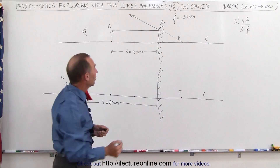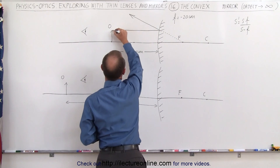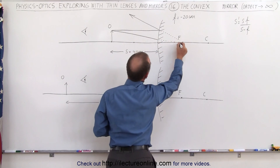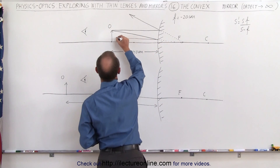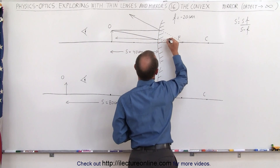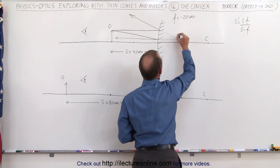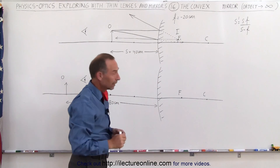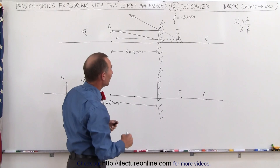The second ray is drawn from the object towards the focal point. But before you get to the focal point, the mirror will intercept. So instead of continuing on to the focal point, it will reflect back parallel to the optical axis, and for the observer it will appear as if this ray came from back here. Where those two lines meet, that's where the brain will form an image. The image is behind the mirror — it is upright but virtual, because it is behind the mirror.